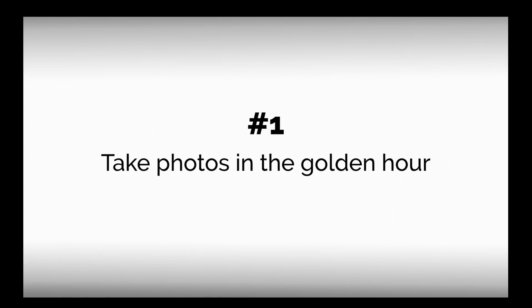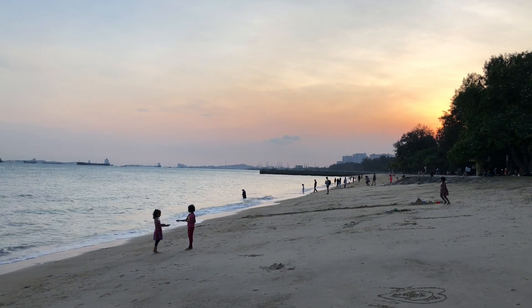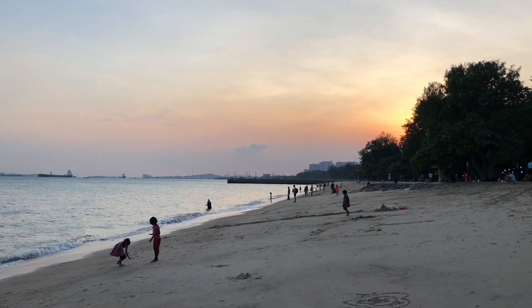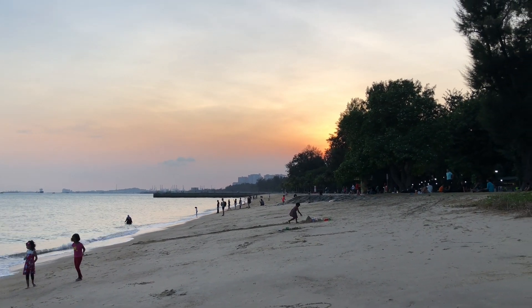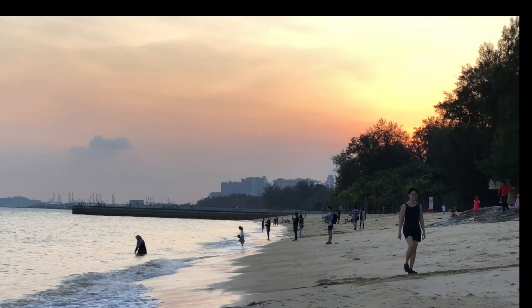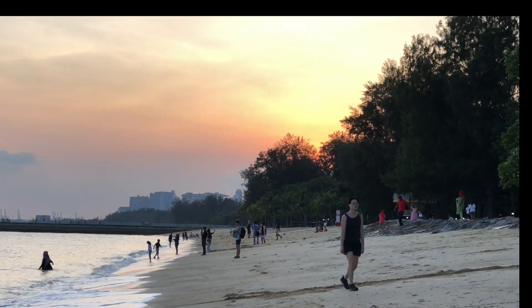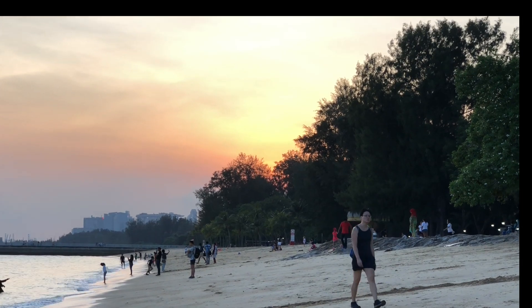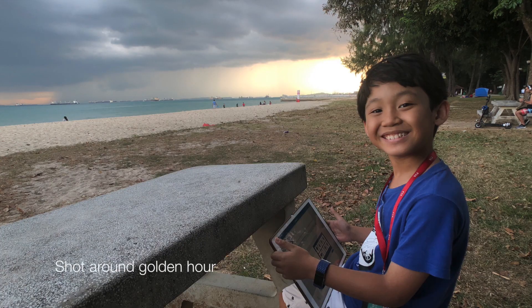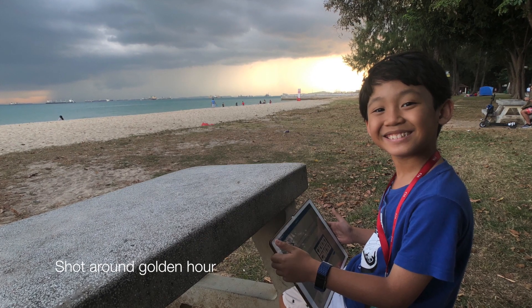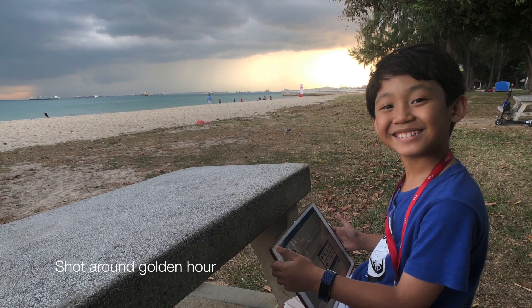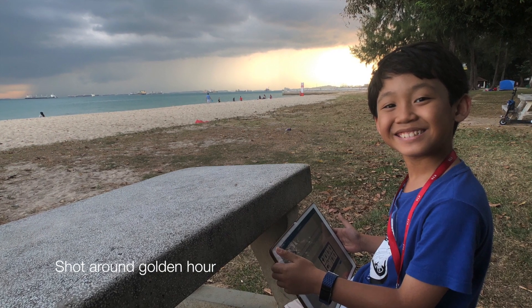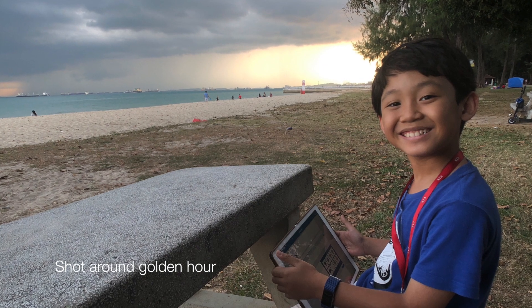Number 1: Take photos during golden hour. This first tip is more relevant to outdoor shots. Golden hour is roughly the first hour of light after sunrise and the last hour of light before sunset. During these times, the sun is low in the sky, producing a soft, diffused light. For example, this photo was shot around golden hour and comes straight out of the iPhone — no editing, no flash, no tripod — yet you can see color and detail in both the sky and the subject.